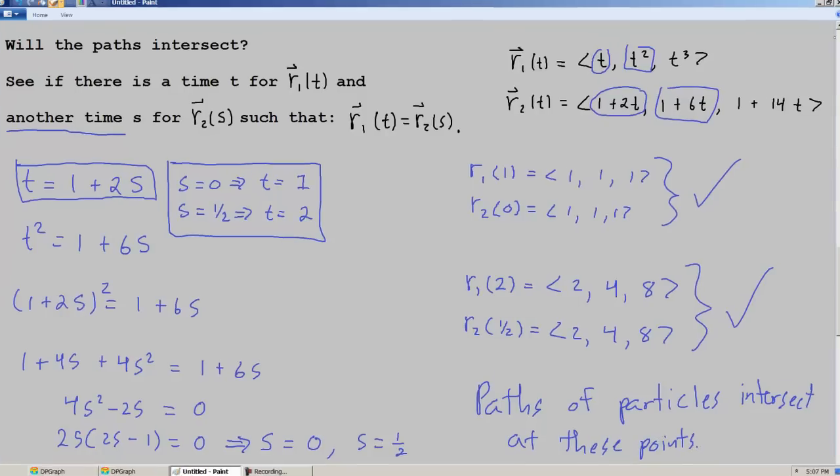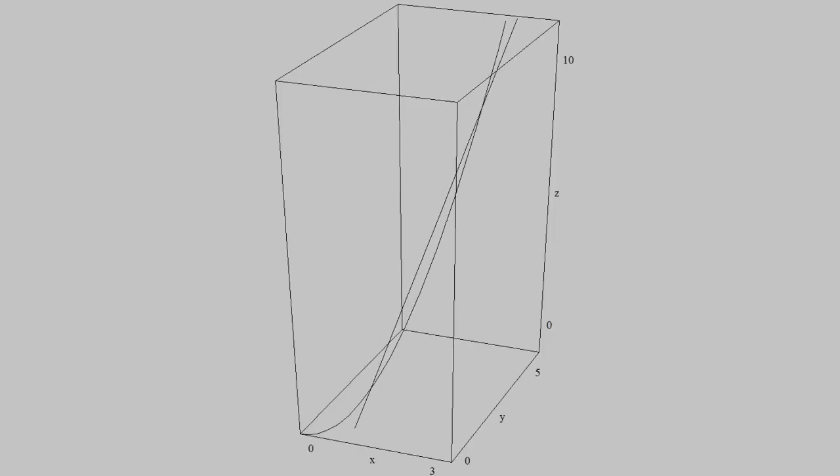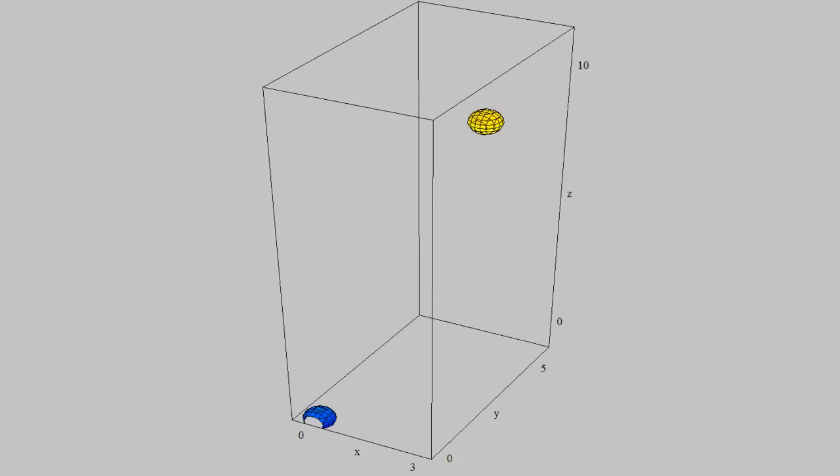And just to look at the visuals again, here are the paths of the particle. And you can see it looks like x is 1, y is 1, and z is 1. There's that point. And then we have x is 2, y is 4, z is 8, and that's that point all the way up there. That's the paths intersecting. And we can obviously see from before as we trace out time, the particles themselves come close, but they don't ever actually intersect with one another. I hope this was helpful, and have a great day.